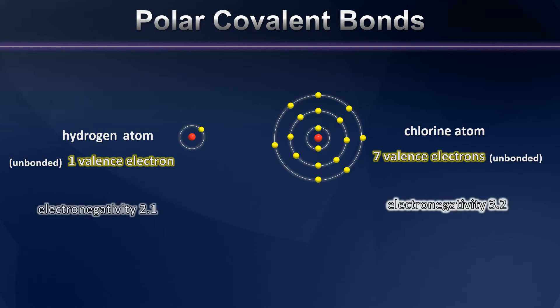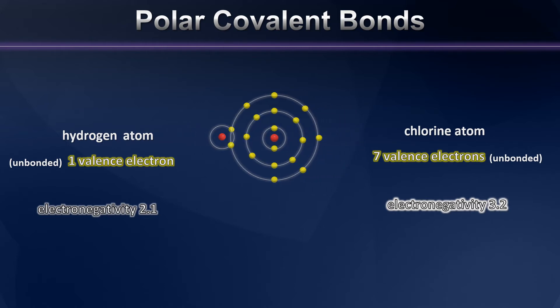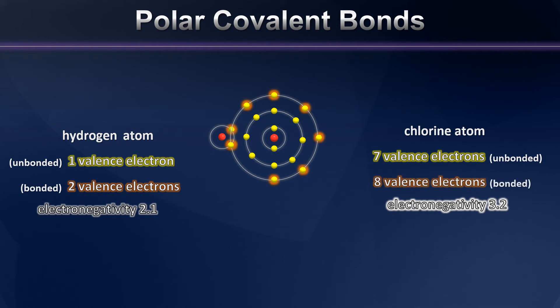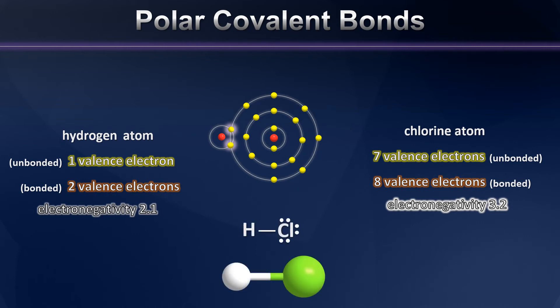But there's a catch. In this case the electronegativities are different. So just as before, hydrogen and chlorine can come together and form a covalent bond, one in which the hydrogen believes it has two valence electrons and the chlorine believes that it has eight valence electrons. So they both feel satisfied with a full octet. Of course two electrons were used in the sharing process to form that bond, meaning we expect a single covalent bond to form between the hydrogen and chlorine atoms.